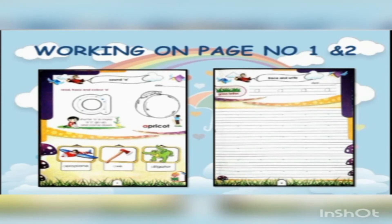So we are going to sing a song here. A for apricot. A for aeroplane. A for eggs. A for alligator. So A for apricot — you have to color it as well. A for aeroplane. A for eggs. And A for alligator.